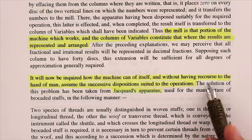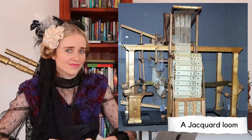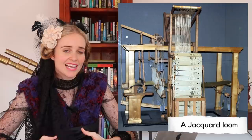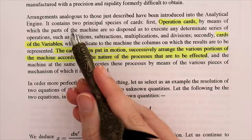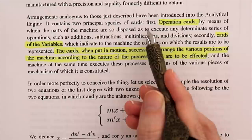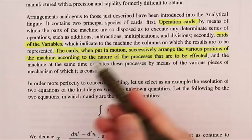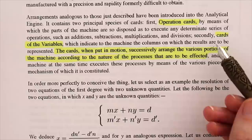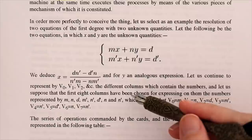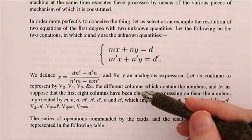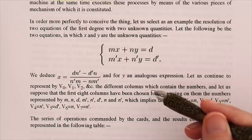You may wonder how the machine knows which operations to perform and which variables to include. The solution has been taken from Jacquard's apparatus — using punch cards that were first used in Jacquard's loom, something used to make intricate patterns in lace and other materials using a series of cards as instructions. There are two main types of cards that will allow us to program the engine. The first are the operation cards, telling the machine whether to perform addition, subtraction, multiplication, or division. The second type is the card of the variables, which indicates to the machine the columns on which the results are to be represented.